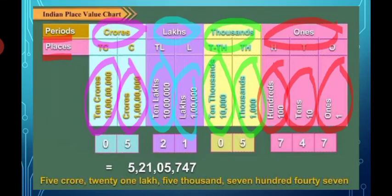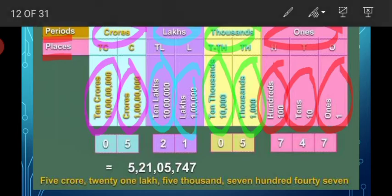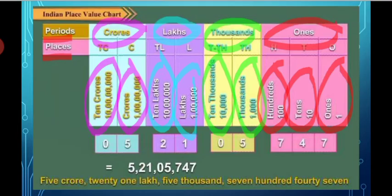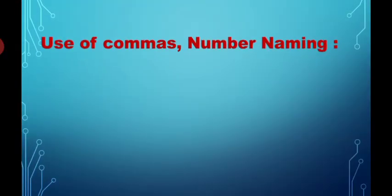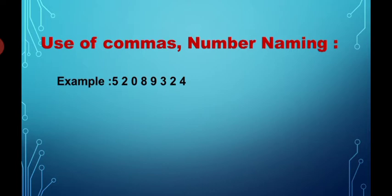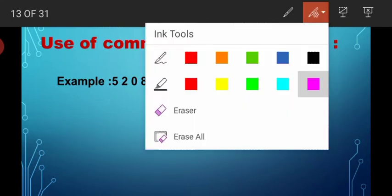Now let's look at the use of commas and number naming. Here is an example for the use of commas. There are some rules we have to remember. First, we have to put a comma after three digits from the right side, that is after the hundreds place.